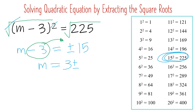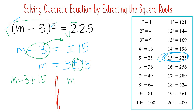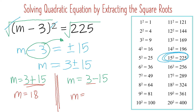Copy plus and minus 15. Since we have two operations, we separate them into two equations. First: m equals 3 plus 15, which gives 18. Second: m equals 3 minus 15, which gives negative 12. We just separate the positive and negative 15 — positive 15 in one equation and negative 15 in the other. So the roots are 18 and negative 12.